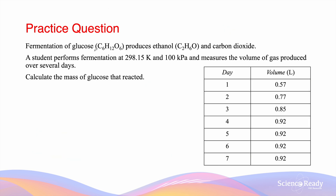The last question: fermentation of glucose (C₆H₁₂O₆) produces ethanol (C₂H₆O) and carbon dioxide. A student performs fermentation at 298.15 K and 100 kPa and measures gas volume over several days. The table shows volumes from 0.57 to 0.77 to 0.85 to 0.92 liters, remaining at 0.92 between days 4 and 7. This indicates all reacting material was exhausted by day 4. We'll work backwards from moles of CO₂ to find moles of glucose.